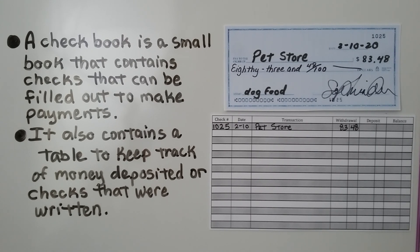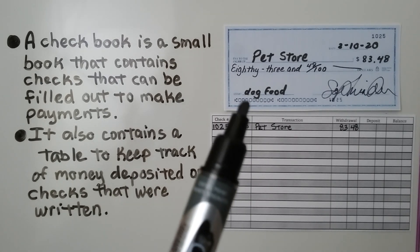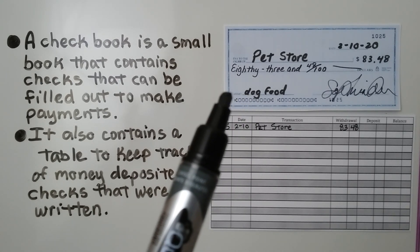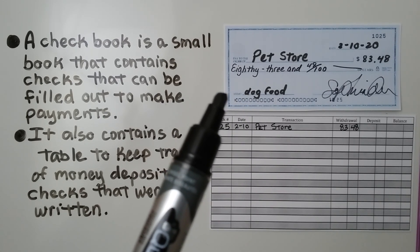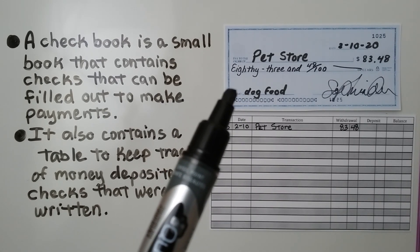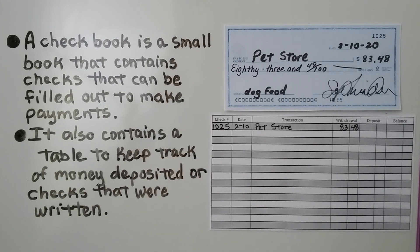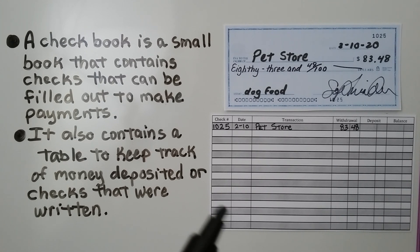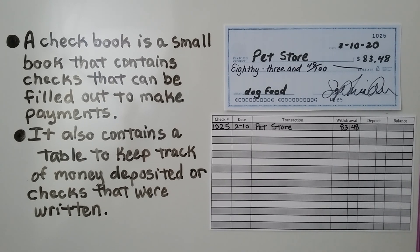A checkbook is a small book that contains checks that can be filled out to make payments. Here's a check made out to a pet store for $83.48. It also contains a table, also called a ledger, to keep track of money deposited or checks that were written.